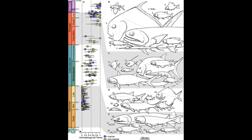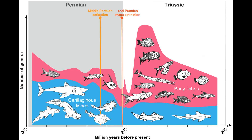They quickly evolved into planktivores, grazers, detritus feeders, small to large predators, and durophages. When we move further into the Mesozoic, Actinopterygian taxonomic diversity surpassed that of Chondrichthians — the cartilaginous fish, the sharks, rays, and chimaeras — and Chondrichthians never again achieved their pre-Mesozoic levels of diversity.